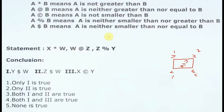Now we get a question. A star B: 'A is not greater than B' means less than or equal to (≤). At the rate (@) symbol: 'A is neither greater than nor equal to' means less than (<). Percentage (%) symbol: 'A is not smaller than B' means greater than or equal to (≥).